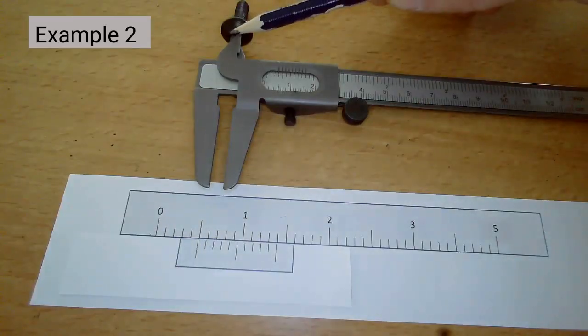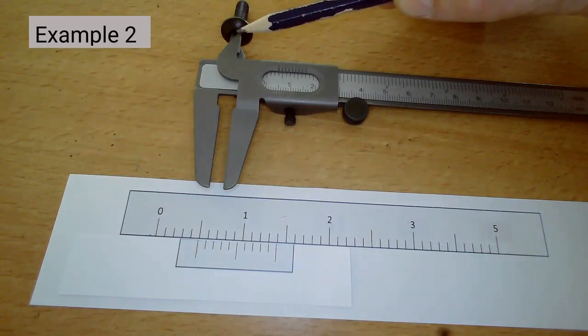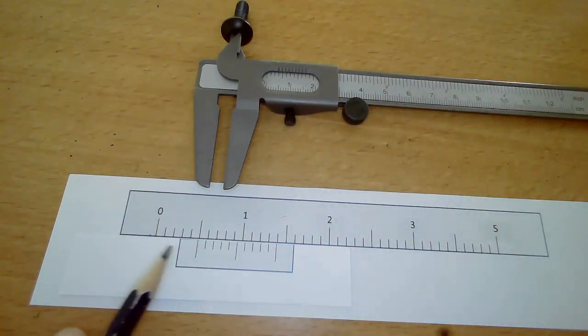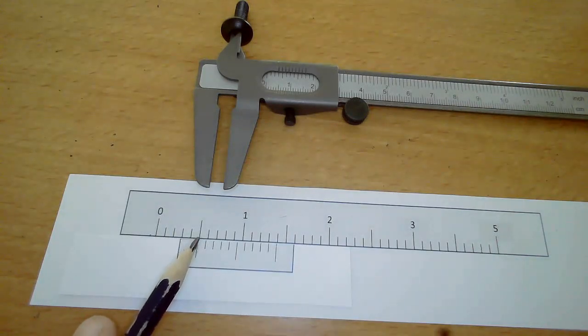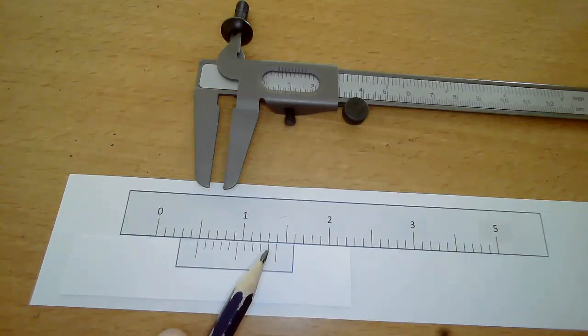Reading the internal diameter of this hole: we're not quite at 0.5 centimeters, so it's 0.4, and the ninth vernier mark lines up, giving 0.49 centimeters.